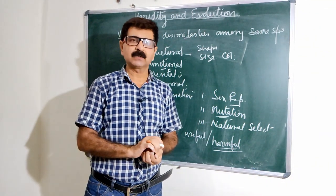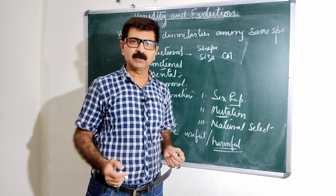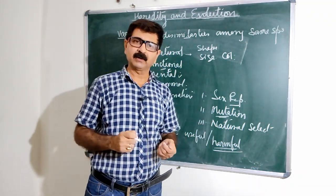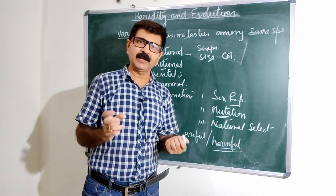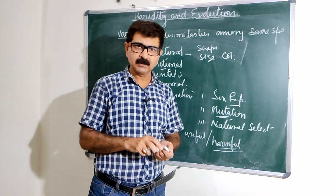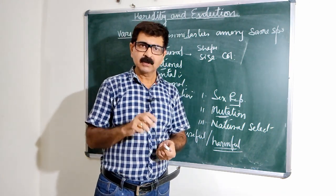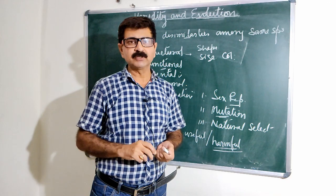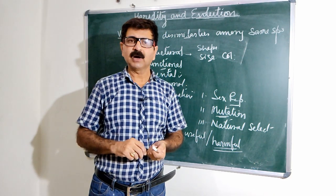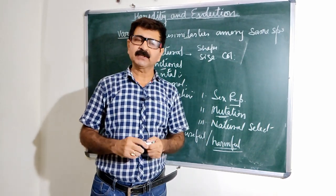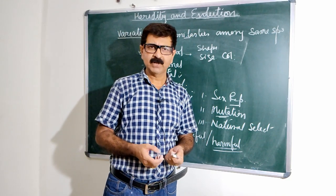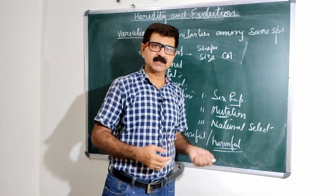Another example is the Swedish stag — their canines grew so large that whenever they tried to eat meat, their own jaws were injured. Finally, they were not able to eat food and were killed. So these are the variations — they can be harmful for that particular species.